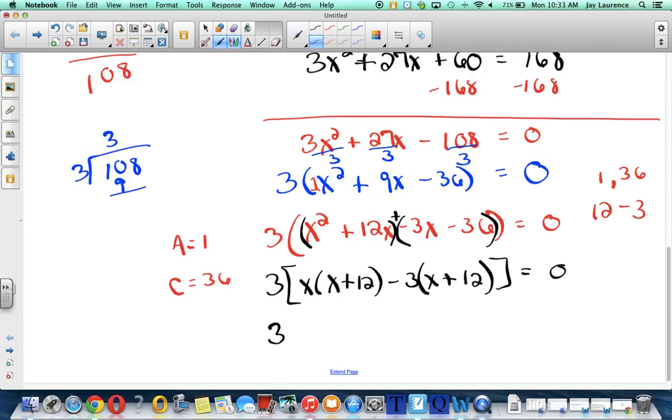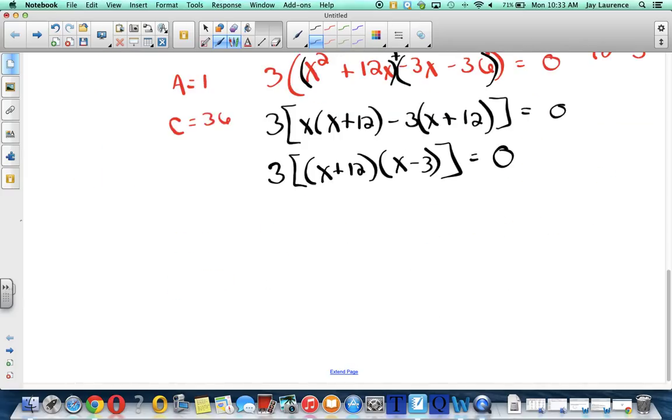All right. And then I'm going to have a 3. And an x plus 12. And an x minus 3. Right? And so I have two possible answers for x. x could equal negative 12. Or x could equal 3. I just solved x plus 12 equals 0. And I solved x minus 3 equals 0. That's what I did there. Kind of did them in my head because they were so simple.